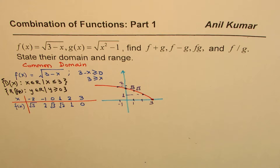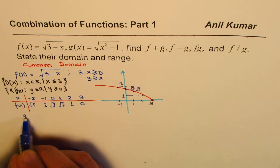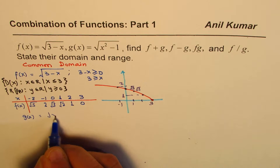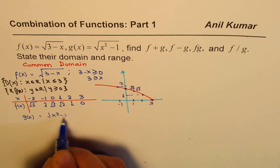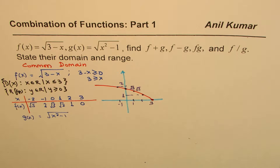Now let's look at the second function: g of x equals square root of x squared minus 1. This function is symmetric about the y-axis — it is an even function.